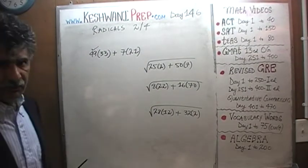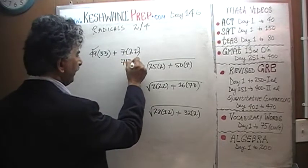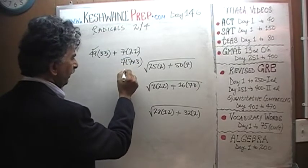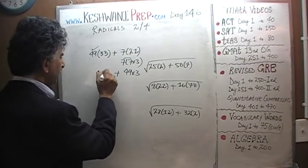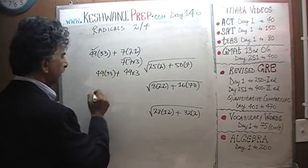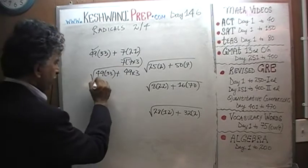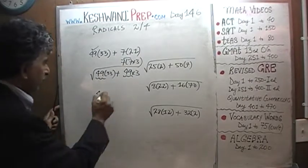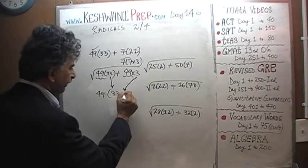If we can get a 49 out of this one, we are home free. We can write 21 as 7 times 3. 21 is 7×3 which is now 7×7 is going to give us √(49×3). And here we have √(49×33).